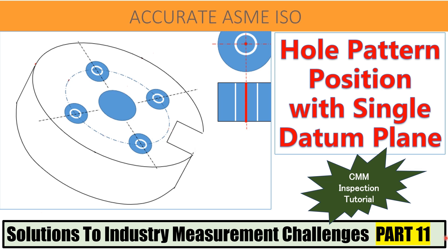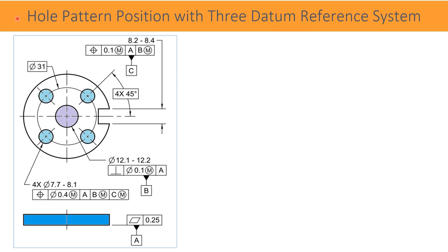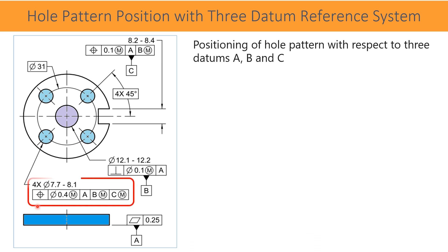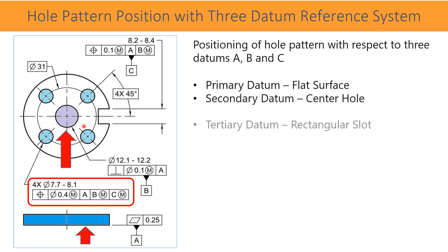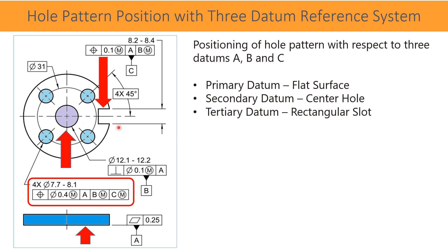First, let us look at a case where all three datums are specified. The drawing shows a pattern of four holes with a position tolerance of 0.4 diametrical tolerance zone, measured at maximum material condition from datum A, datum B, and datum C. The primary datum is a flat plane, the secondary datum is the axis of the center hole, and the tertiary datum is the center of a slot. Each hole is constrained in six degrees of freedom.